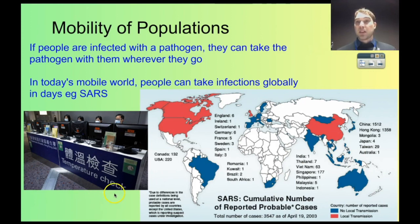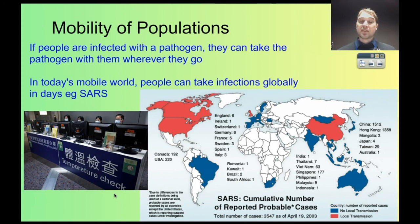That mobility of people means diseases can spread much faster than they used to. So today on Flipping Science we looked at the factors that affect how diseases are spread. That's your Flipping Science today. See ya.